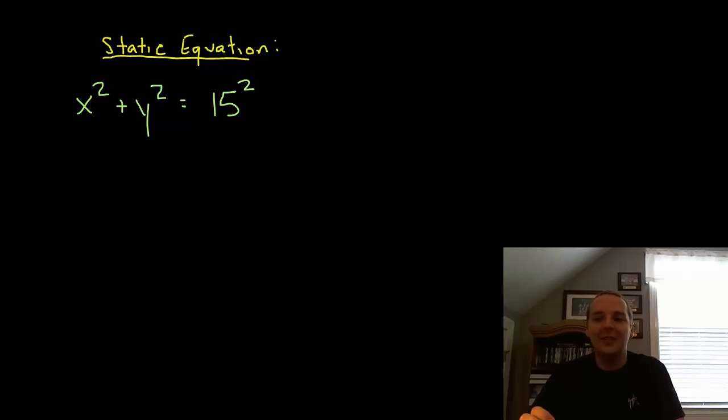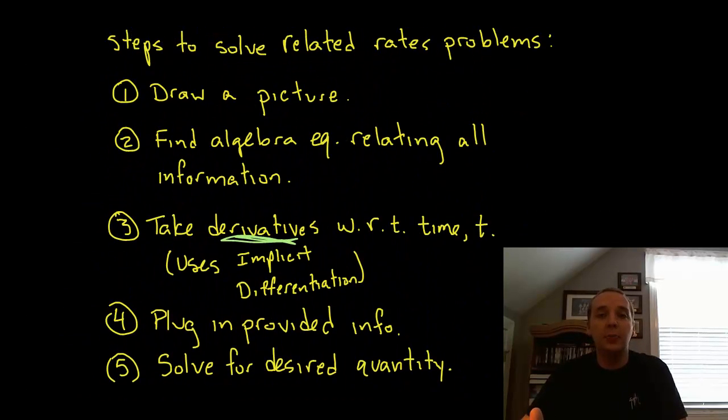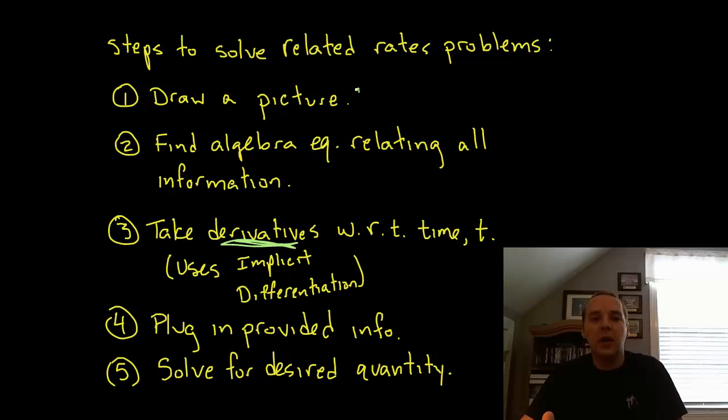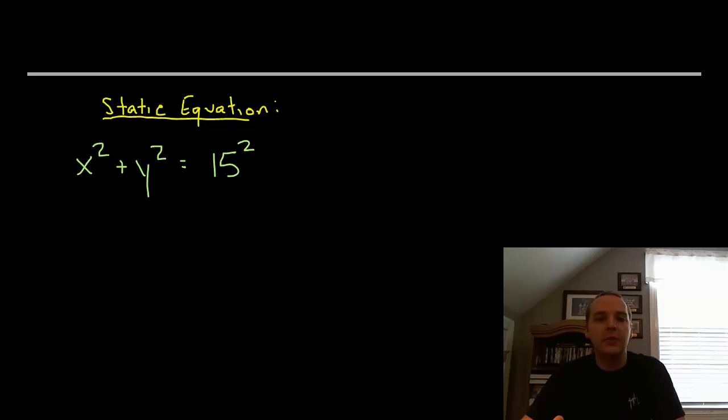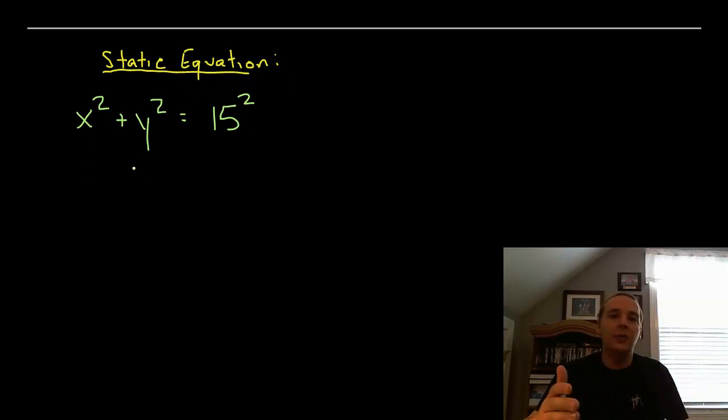Now that's a static equation and that might change problem to problem. So I've got a picture, I found an equation relating all the information, but in this equation nothing's moving, so now I need to take derivatives. There's nothing moving in this situation here, so I'm going to differentiate everything with respect to time, t, both sides of the equation.